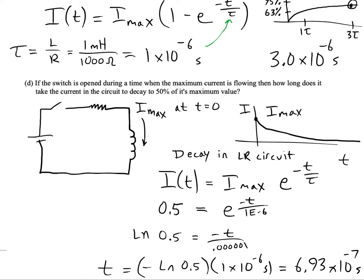So less than one time constant. Which makes sense because it would actually take one time constant for the current to decay to 37% of its initial value. So if we only want to go to 50% here, then it shouldn't take even a time constant. It'll be less than a time constant. So apparently it's 6.93 times 10 to the minus 7.